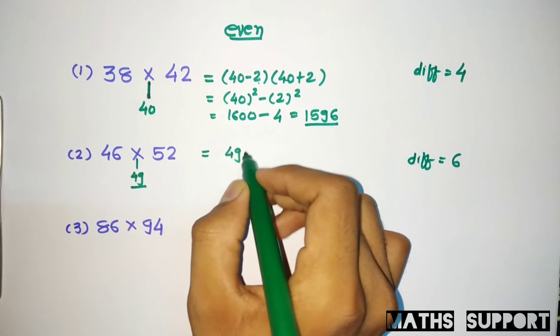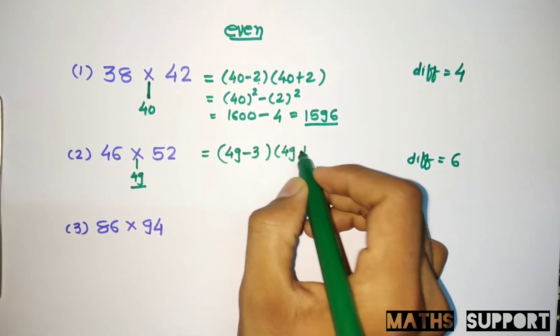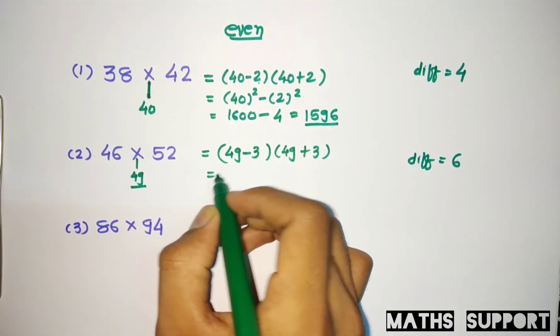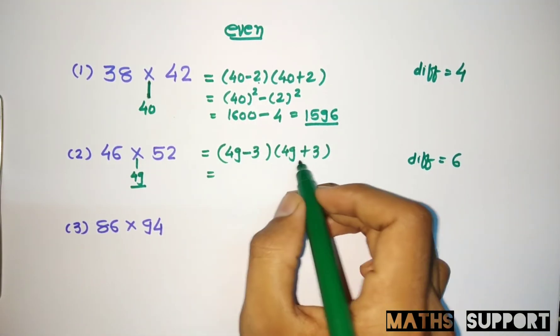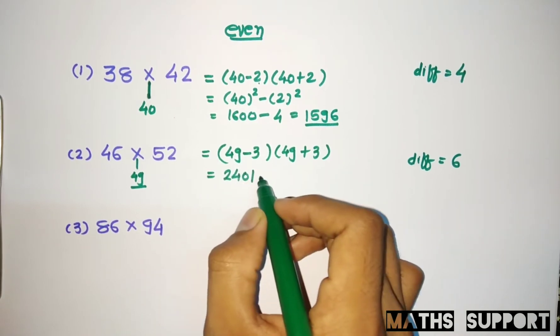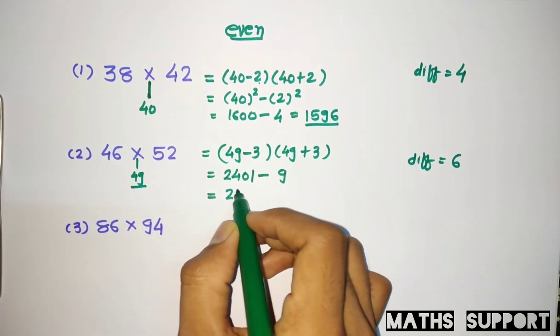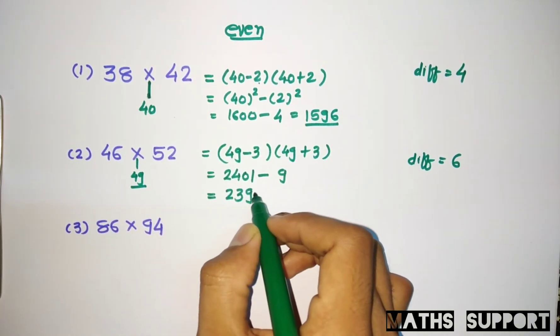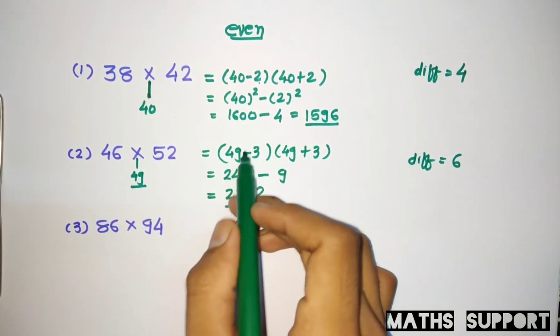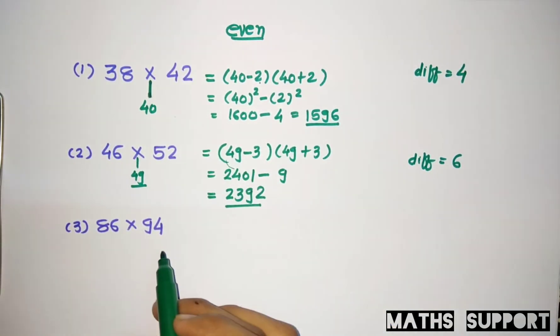So it's 49 square minus 3 square. 49 square is 2401 minus 3 square is 9, so your answer is 2392. Here you need to find the square of a number, and for that trick is already given.